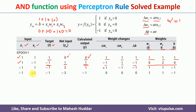We present the next input: x1=-1, x2=1, target=-1. We calculate y_in = 2 (using the updated weights). Since 2 > 0, output y=1. Target is -1; they are not the same, so we update again. Delta_w1 = 1, delta_w2 = -1, delta_b = -1. New weights: w1 = 0+1 = 1, w2 = 2+(-1) = 1, b = 0+(-1) = -1.